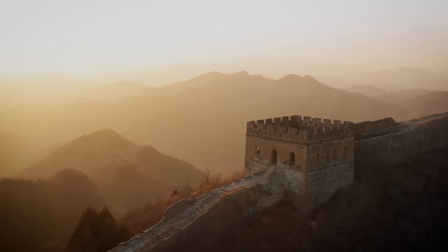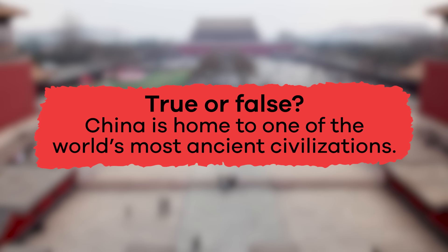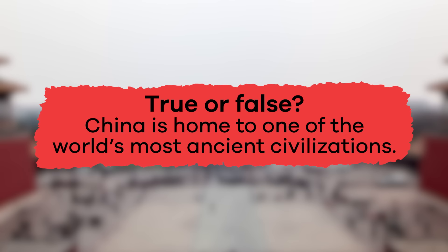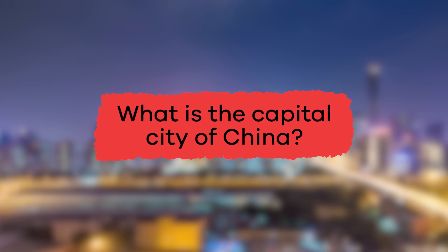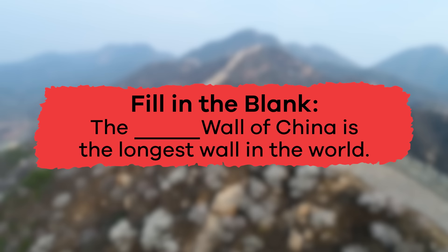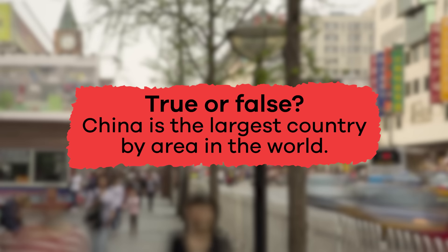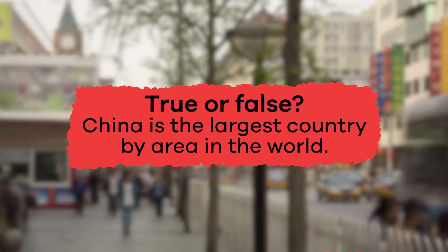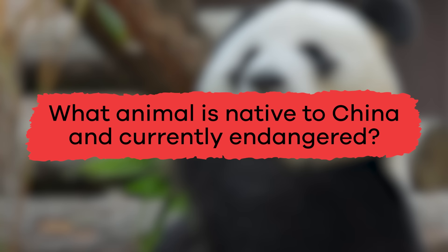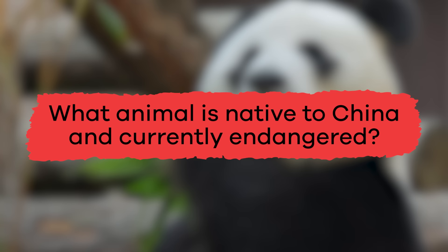We have just learned a lot of facts about China. Let's see what you remember. True or false: China is home to one of the world's most ancient civilizations? True! What is the capital city of China? Beijing, or Peking. Fill in the blank: The blank Wall of China is the longest wall in the world — Great Wall of China! True or false: China is the largest country by area in the world? False, but it is the largest country by population in the world. What animal is native to China and currently endangered? The giant panda. Great job, everyone!